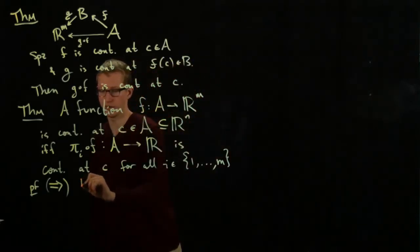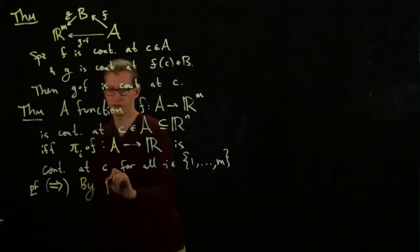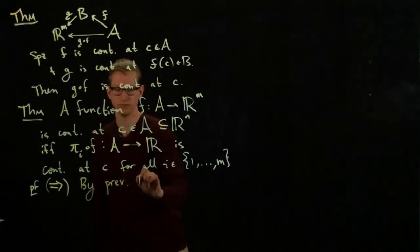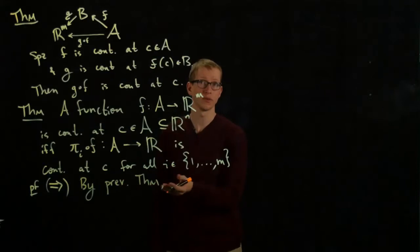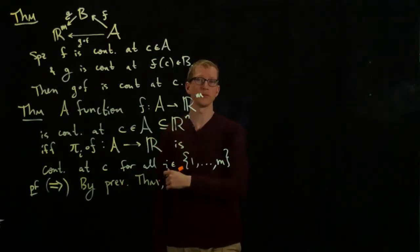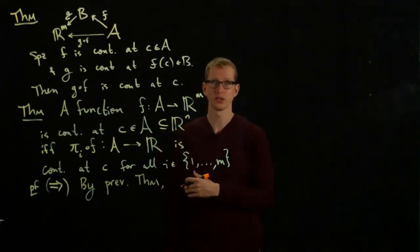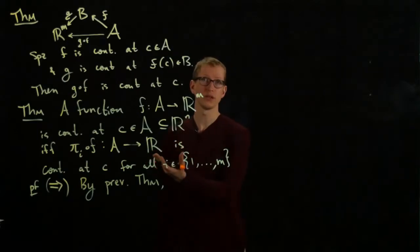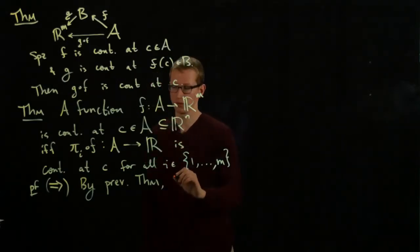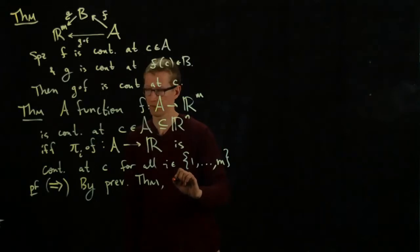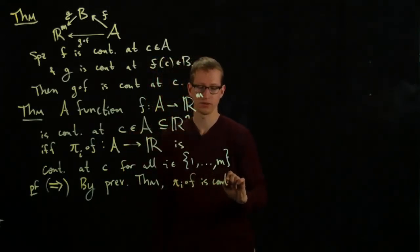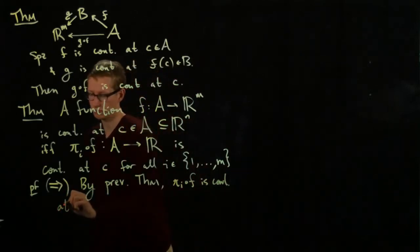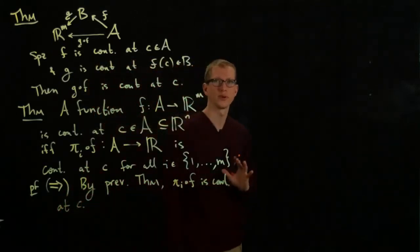So because, by previous theorem, pi_I is continuous from the earlier, even before this theorem we had, we proved that the projections are continuous, and F is continuous by assumption, together with this theorem shows that pi_I composed with F is continuous at C. So that part of the proof is rather simple.